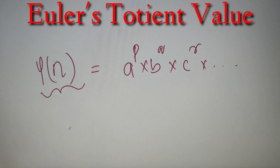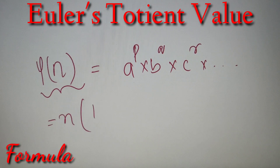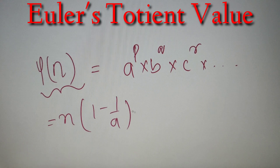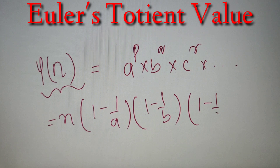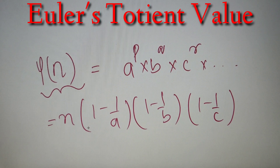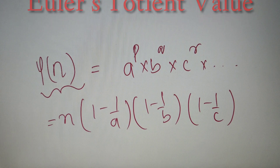In the second step, we use the formula: φ(n) = n × (1 − 1/a) × (1 − 1/b) × (1 − 1/c) × … and so on, where a, b, and c are the prime factors of n. Using this simple formula, we can easily calculate the Euler's Totient value of any given number, which gives all the co-primes of n less than it.